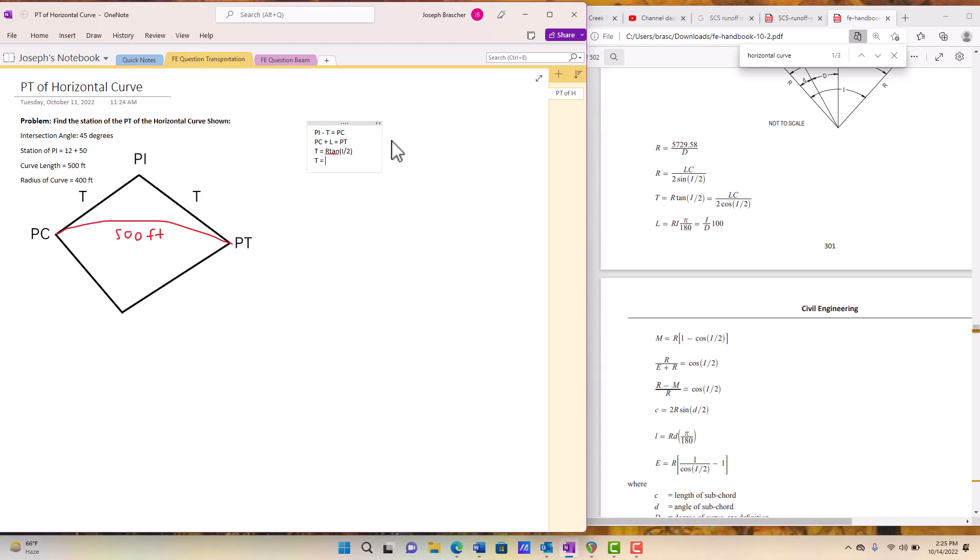So tangent equals the radius of curve, which is 400 times tangent of 45 divided by two, and that equals 165.7. So now we can go 12 plus 50, which is just 1250 feet, minus 165.7, and that equals 1084.3.